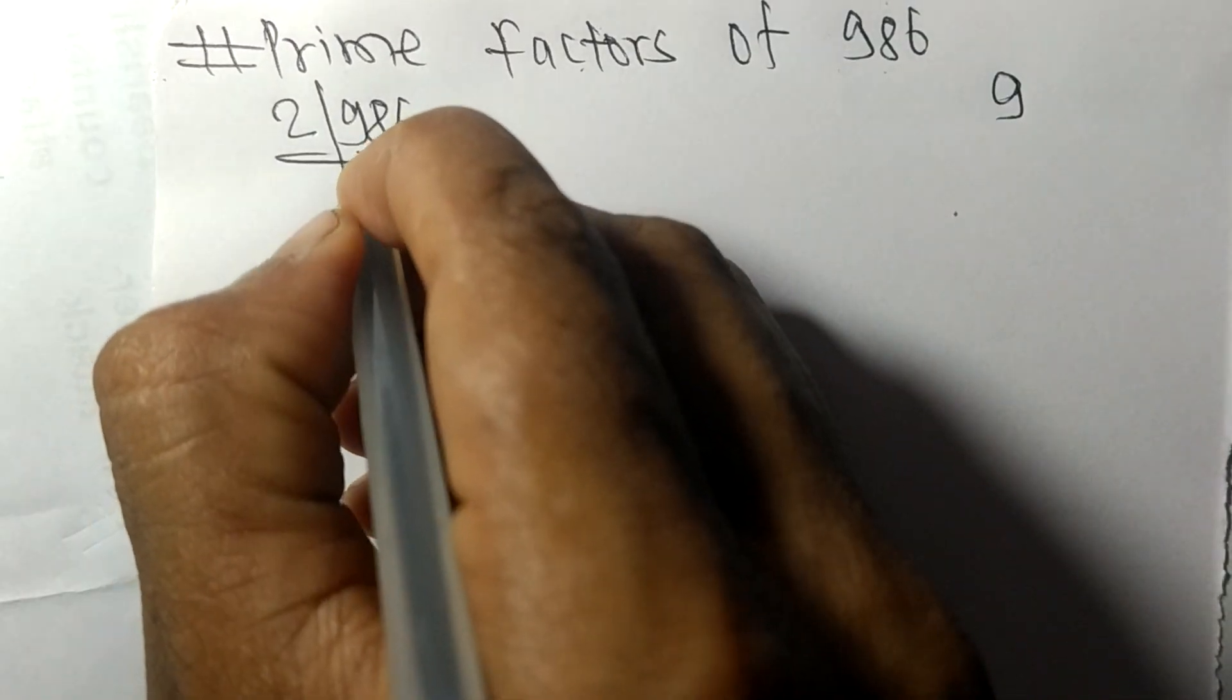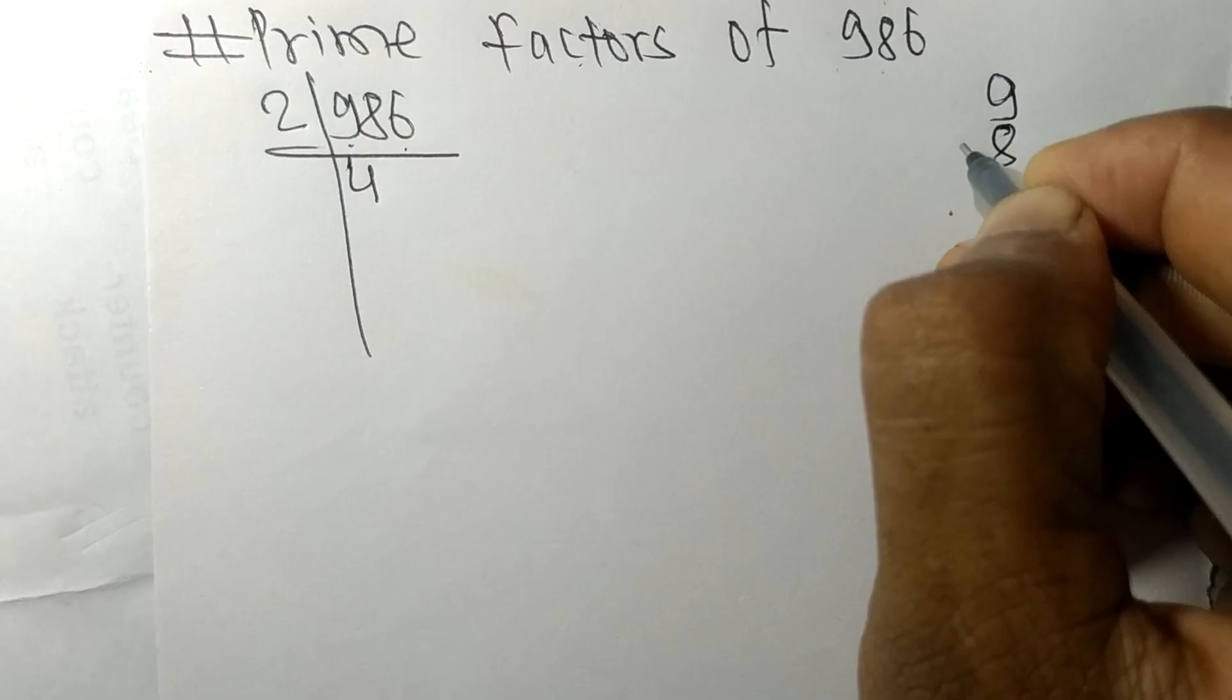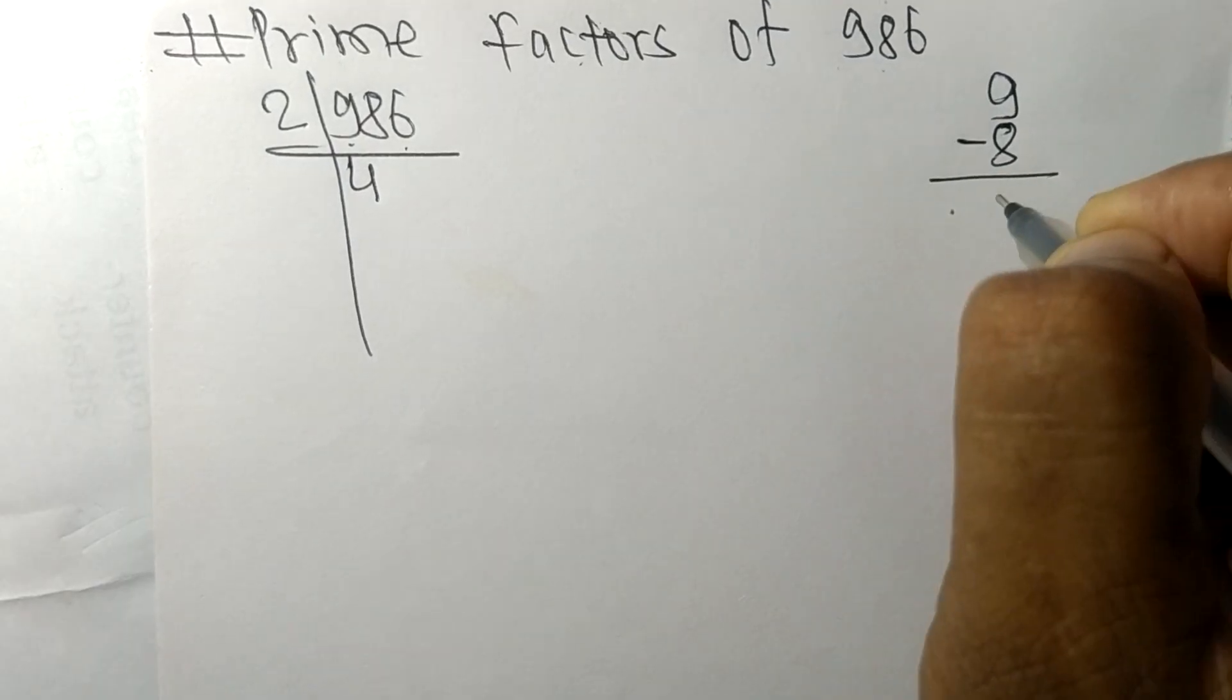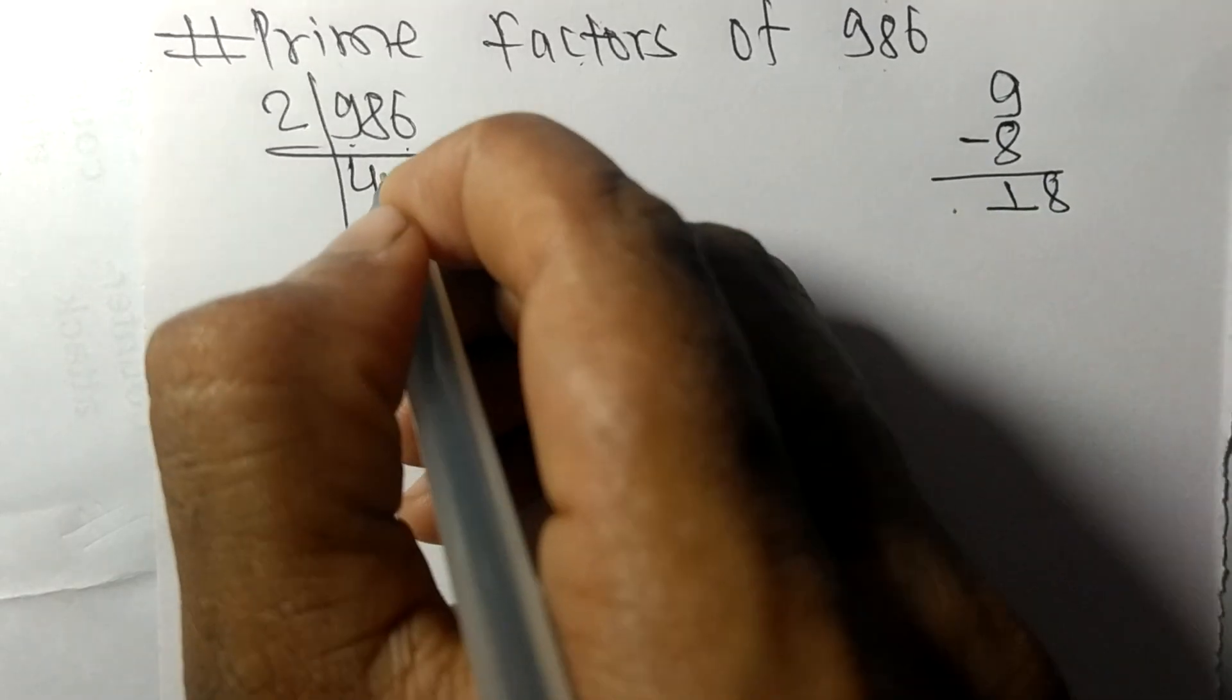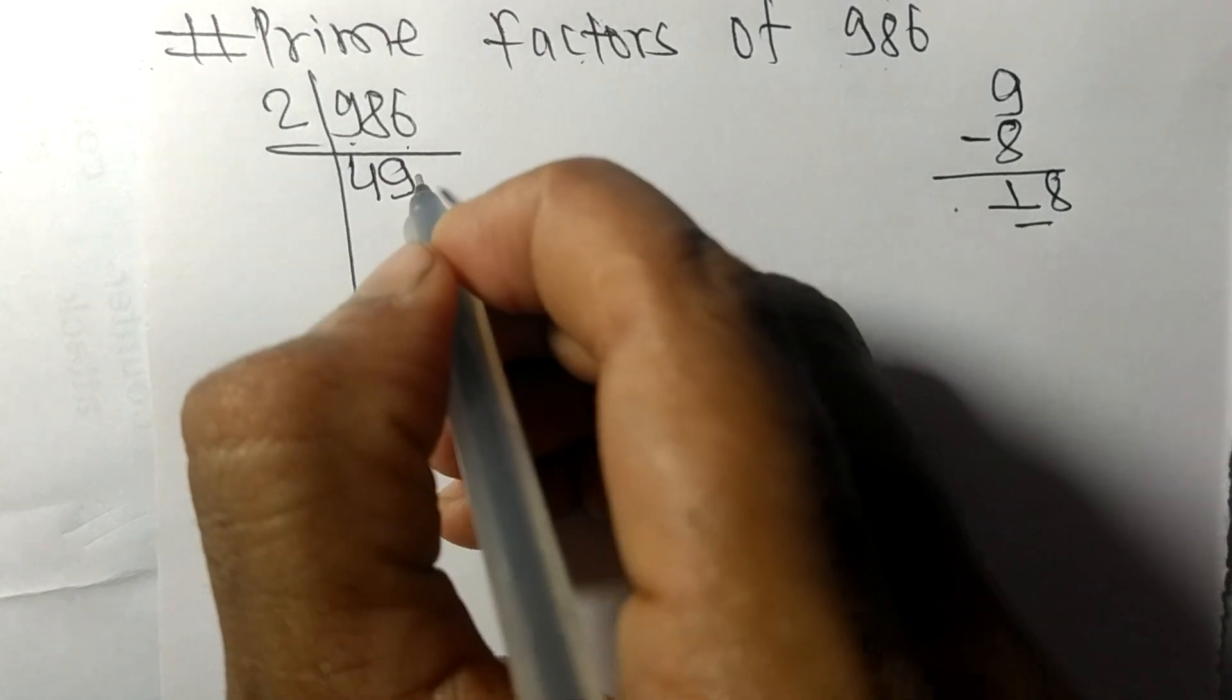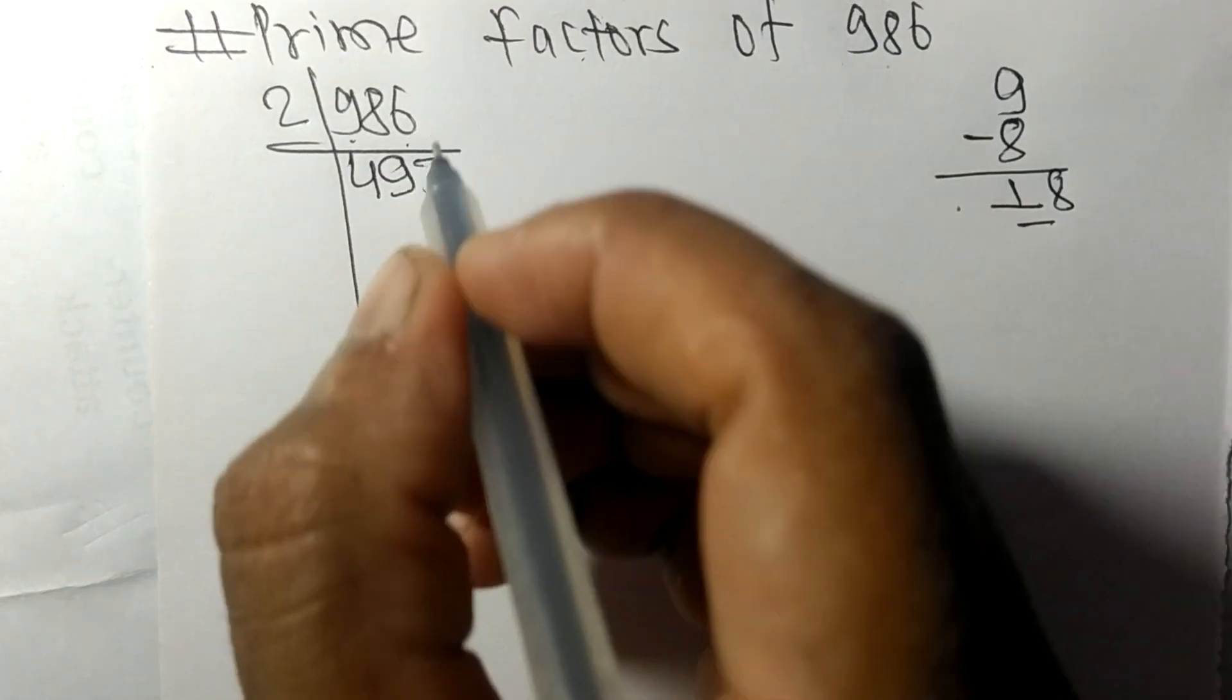2 times 4 equals 8. Subtracting from 9, we get 1. Bringing down 8 gives us 18. 2 times 9 equals 18. Then 2 times 3 equals 6, giving us 493.